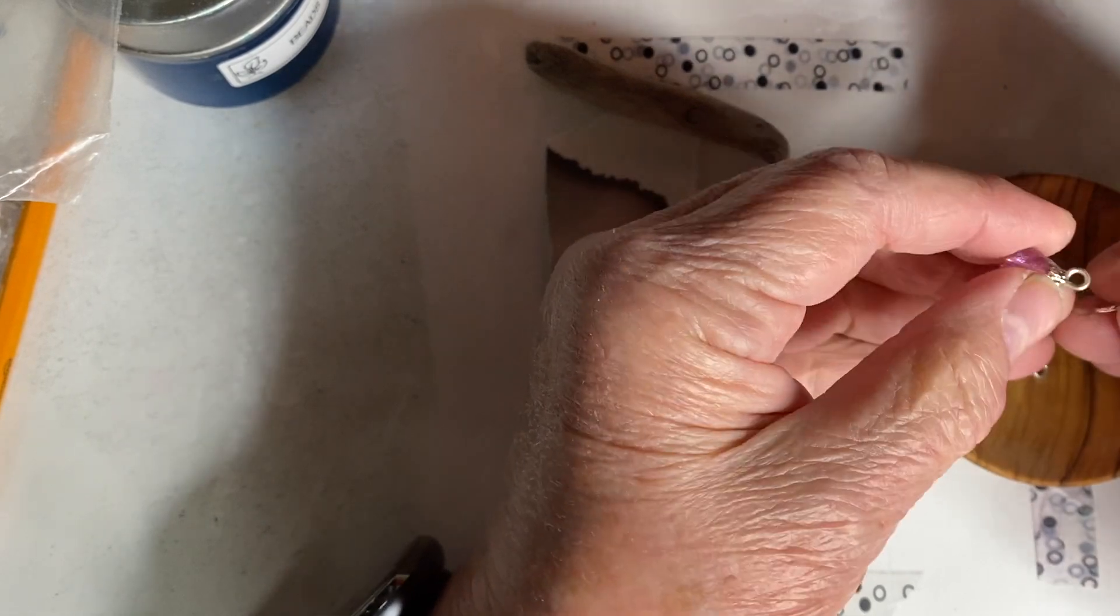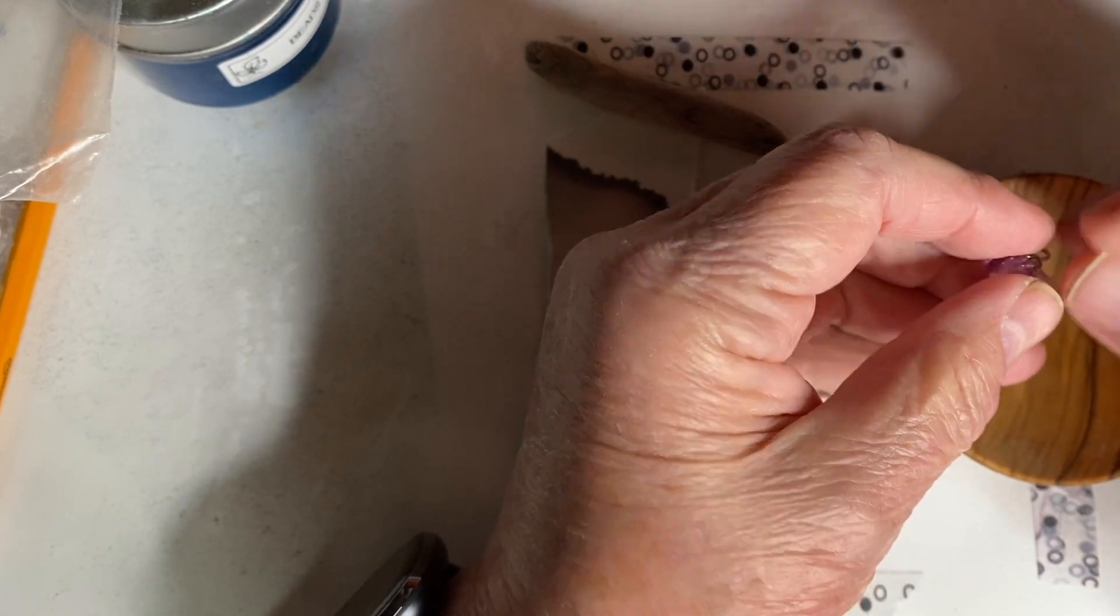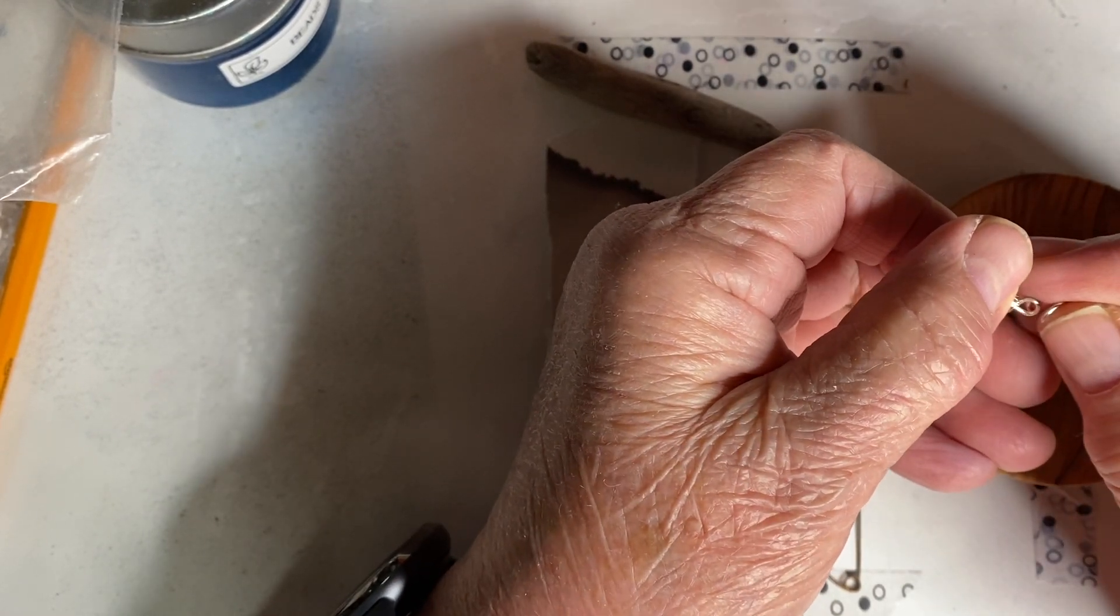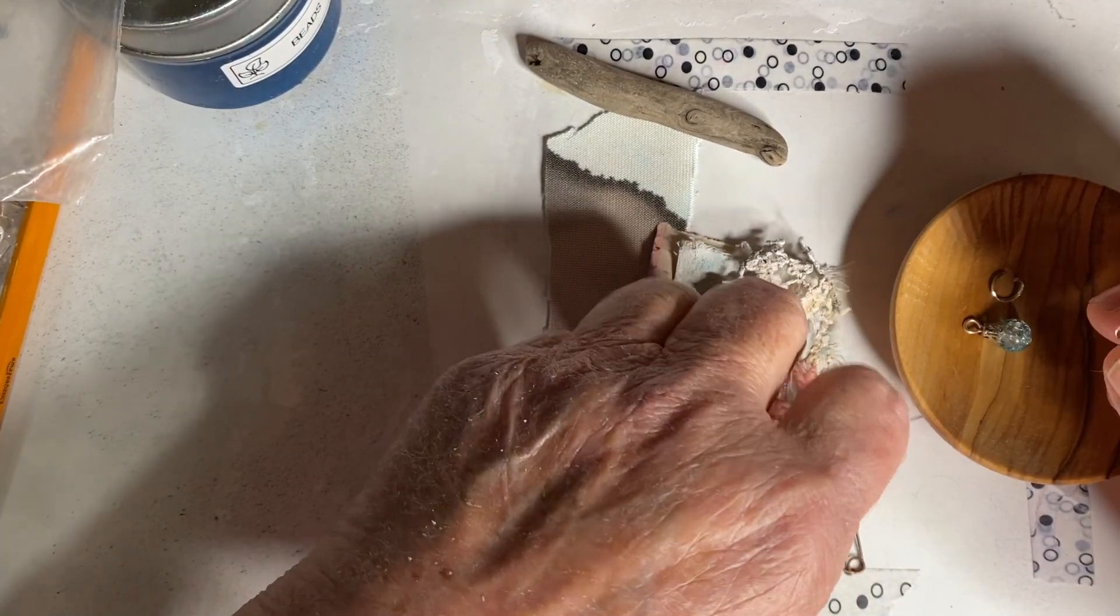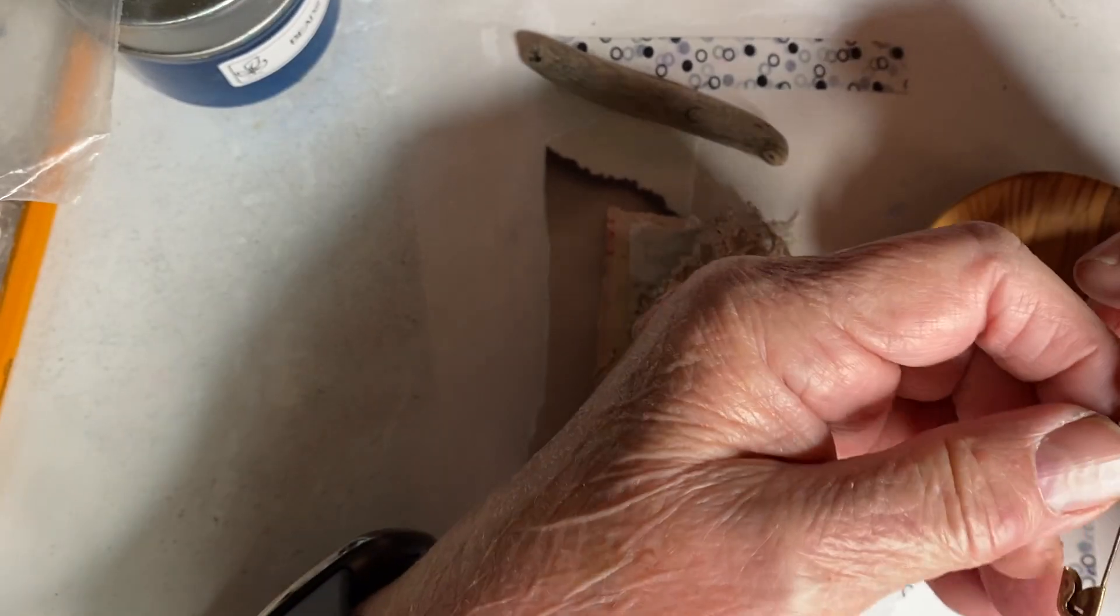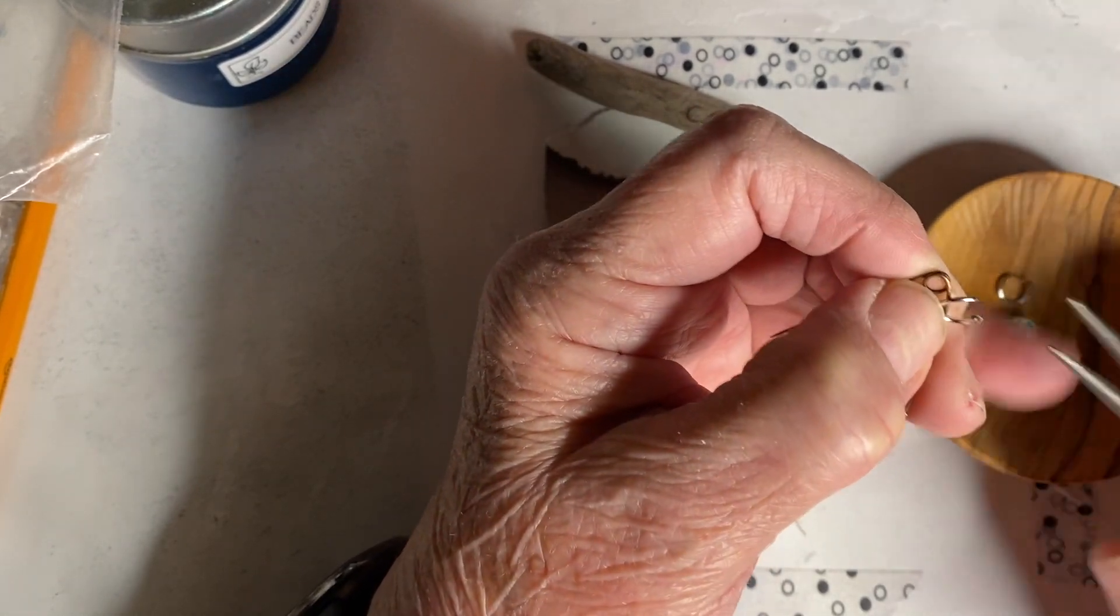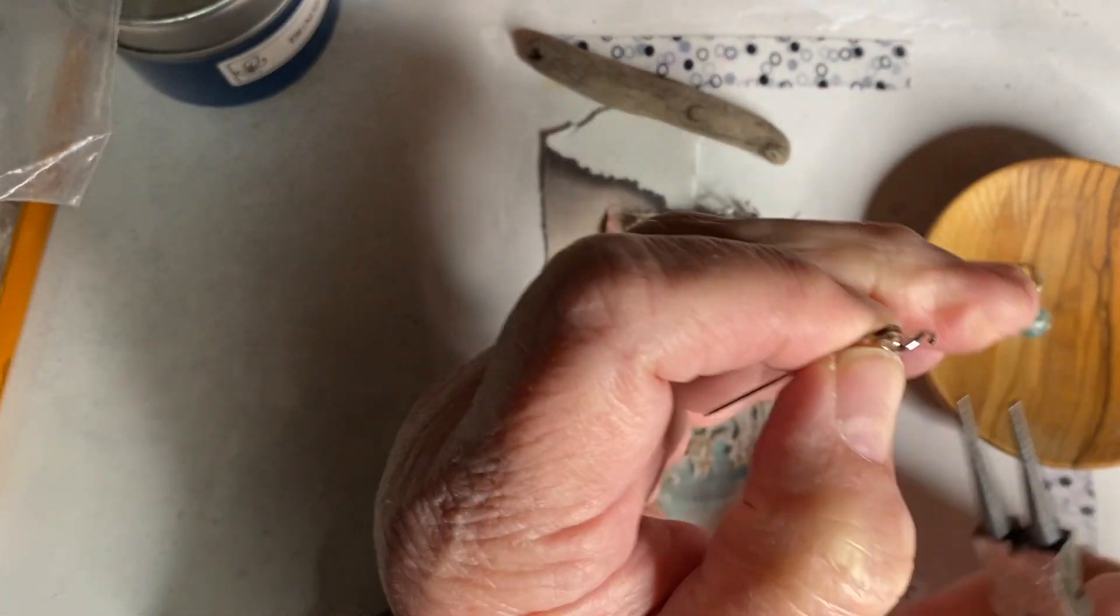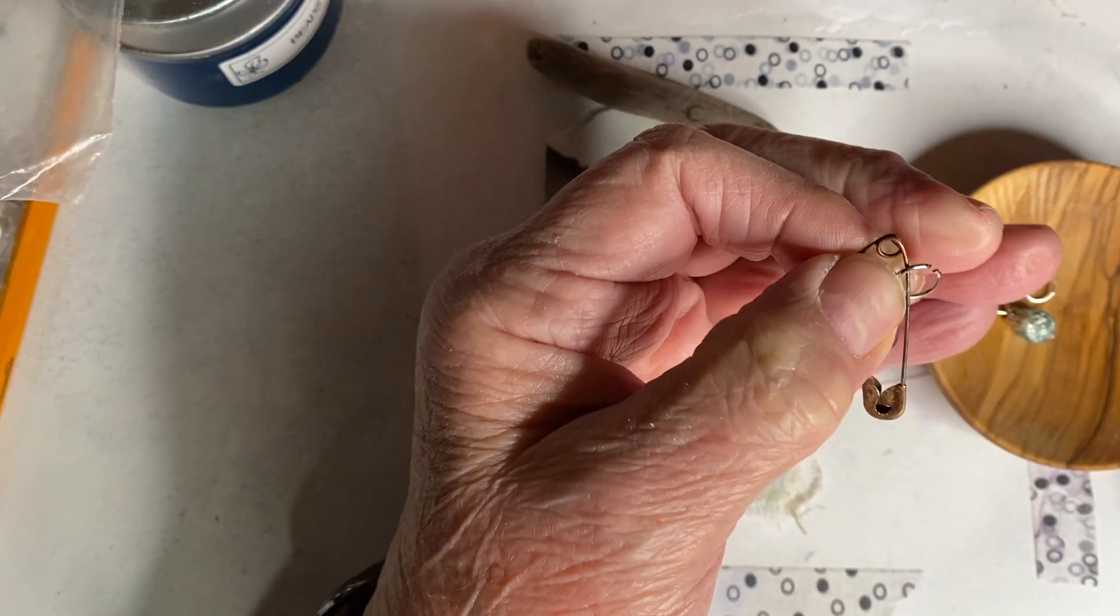Okay, let's try this again. We're gonna put a jump ring on the bead. Doesn't help that my hands seem to be shaking. Alright, so I'm gonna put it on the part of the safety pin that is closed, in other words it doesn't open. Now I'm going to take these pliers and push the jump ring together.